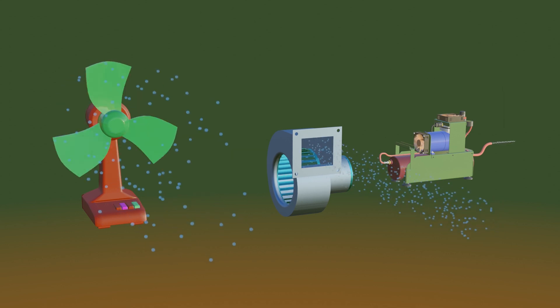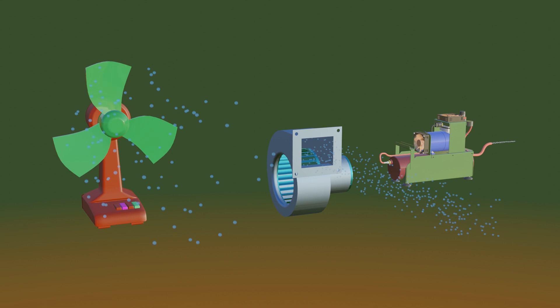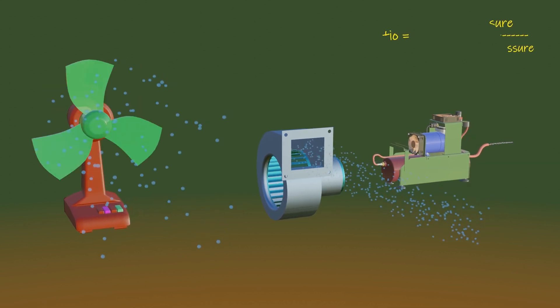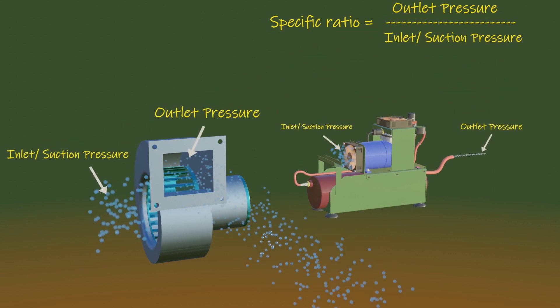The major parameter that sets aside a fan from a blower and compressor is specific ratio. It is the pressure ratio at the outlet of the delivery to that of the pressure at the inlet. Thus it defines the extent to which the fluid is compressed.